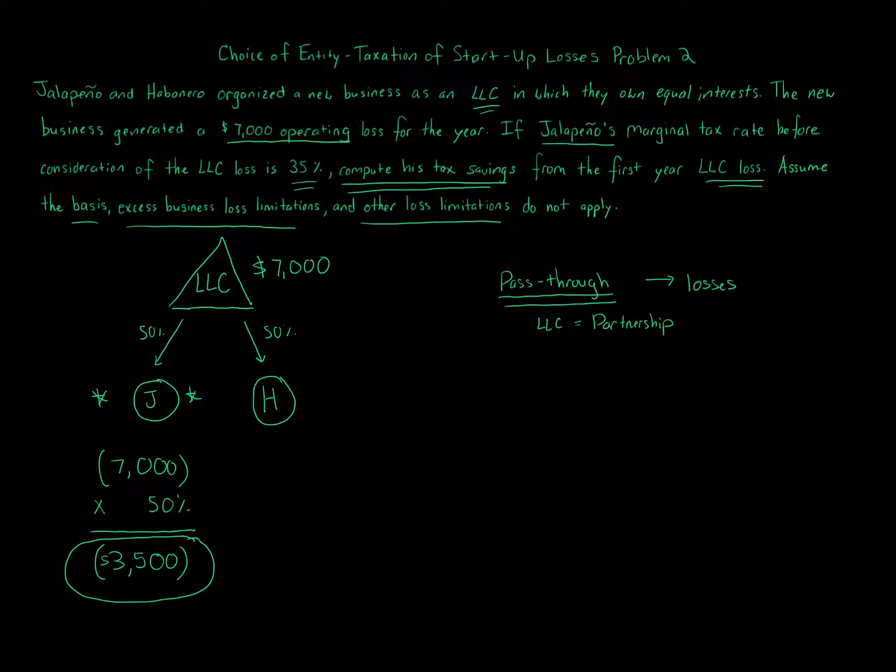Now again, the problem says to assume that the loss limitations do not apply, but in practice they would. You have to go through all that: the basis limitation, excess business loss, at-risk limitations, passive activity. But if it says not to worry about loss limitations, that's the answer: $3,500.